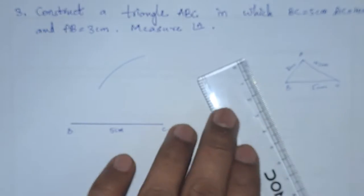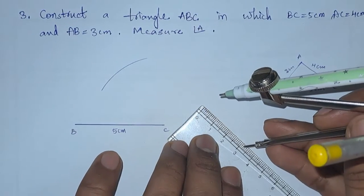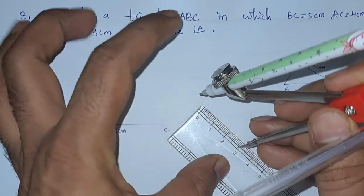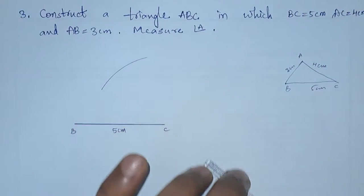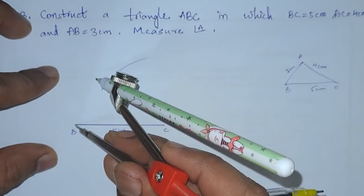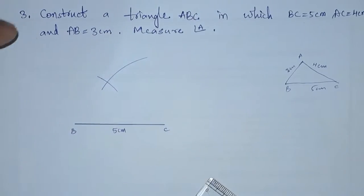Next, from B we need to take the radius as 3 centimeters. This is 3 centimeters radius. Now, from B we will draw an arc. This we got.